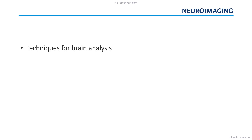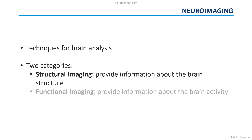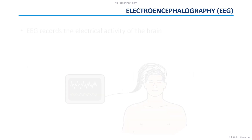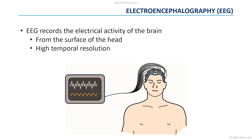Generally, neuroimaging methods are techniques used to analyze the brain. There exist two categories: structural imaging provides information about the structure of the brain, while functional imaging covers brain activity. Thanks to EEG, we can record the electrical activity of the brain from the surface of the head with a high temporal resolution, which is essential for the diagnosis of schizophrenia.